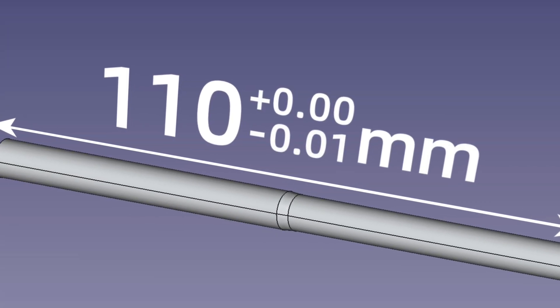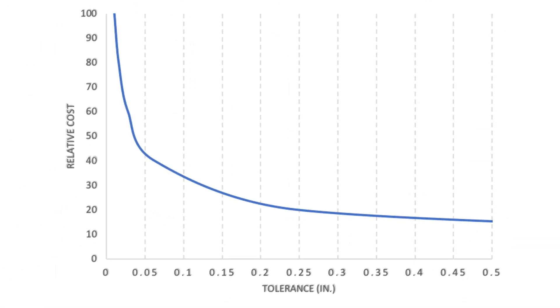This might sound crazy, but improving quality by loosening tolerances can actually be a smart move. When you tighten tolerances, costs go up, and the chance of rejection increases too. So from a cost standpoint, we actually want tolerances to be on the larger side.